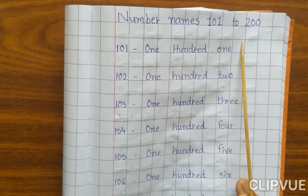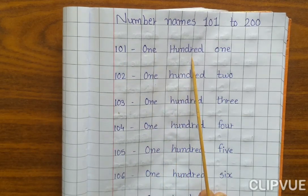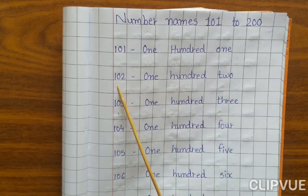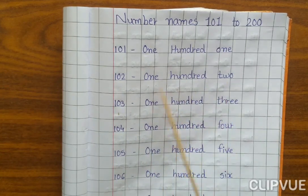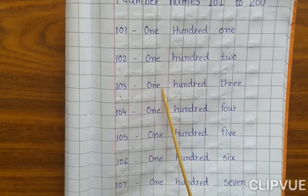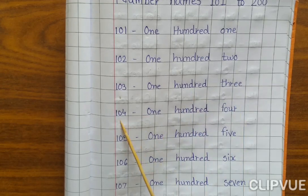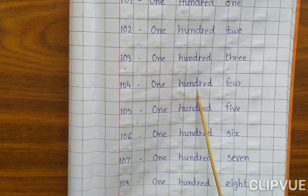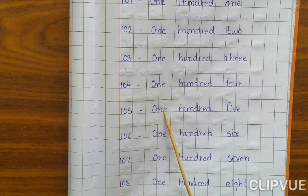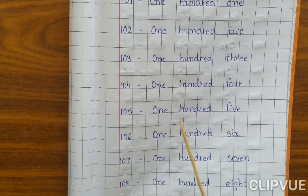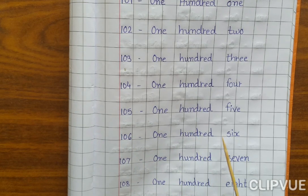101: O-N-E H-U-N-D-R-E-D ONE, 101. 102: O-N-E H-U-N-D-R-E-D T-W-O, 102. 103: O-N-E H-U-N-D-R-E-D T-H-R-E-E, 103. 104: O-N-E H-U-N-D-R-E-D F-O-U-R, 104. 105: O-N-E H-U-N-D-R-E-D F-I-V-E, 105. 106: O-N-E H-U-N-D-R-E-D S-I-X, 106.